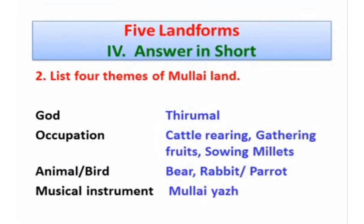List out the four themes of Mullai land. God: Thirumal. Occupation: cattle-rearing, gathering fruits, sewing millets. Animal or Bird: Bear, Rabbit; Bird is Parrot. Musical Instrument: Mullai Yawl.